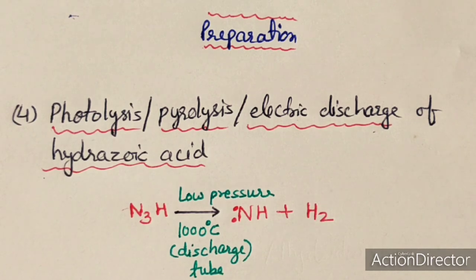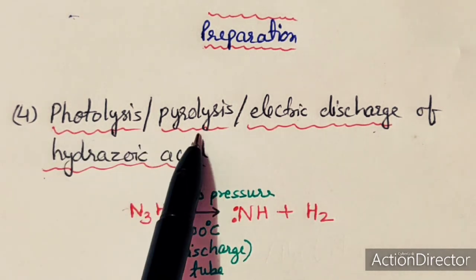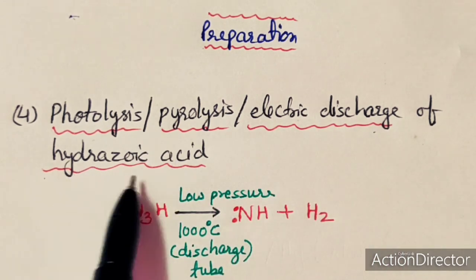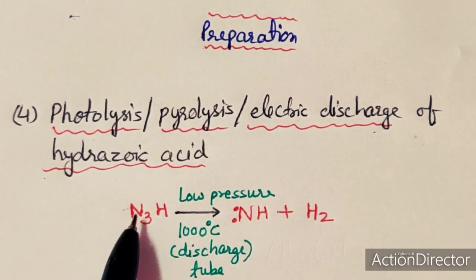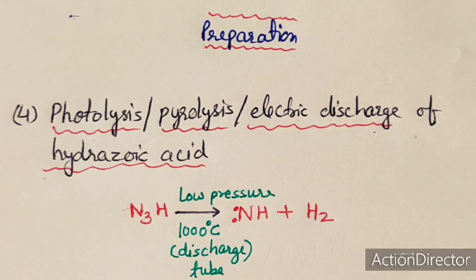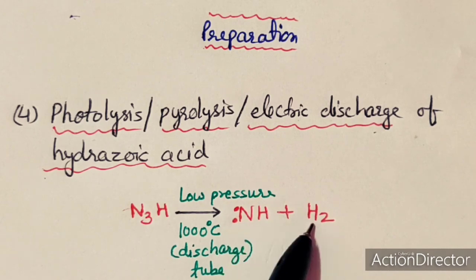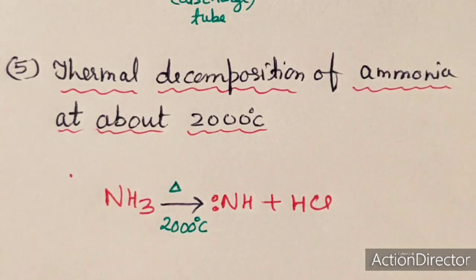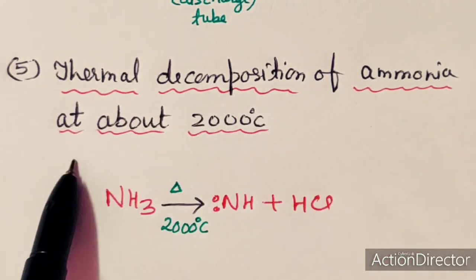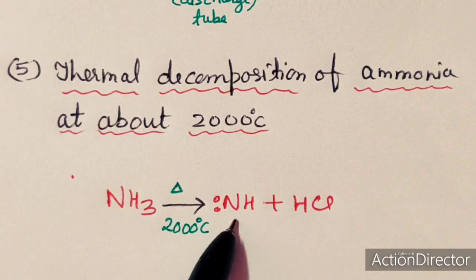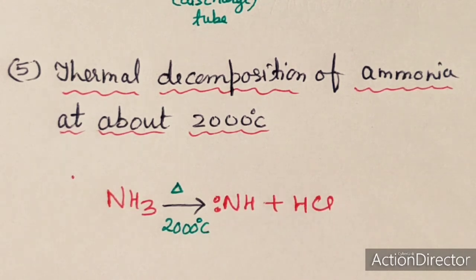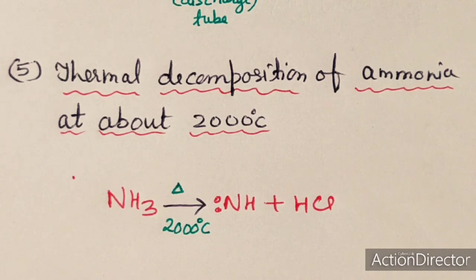The fourth method of preparation of imine free radical is photolysis, pyrolysis, or electrical discharge of hydrozoic acid. Heating hydrozoic acid in a discharge tube, or simply heating it, or exposing it to light, can form the imine free radical. The fifth method is the thermal decomposition of ammonia at about 2000 degrees centigrade. These are the methods of preparation of imine free radical.